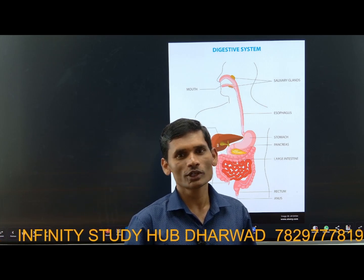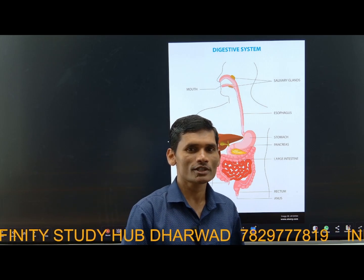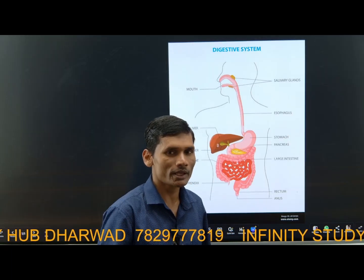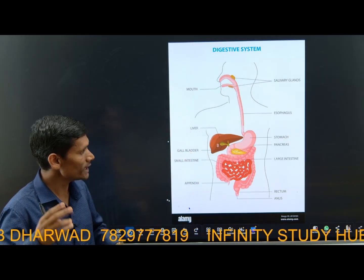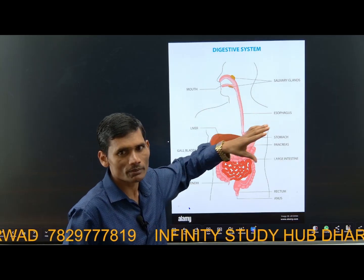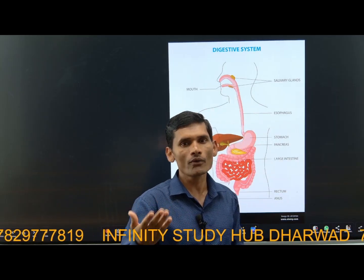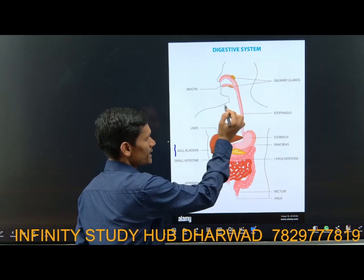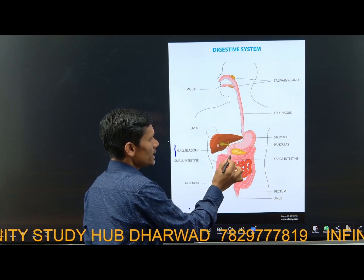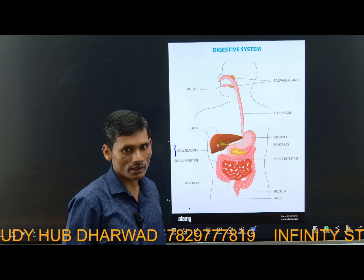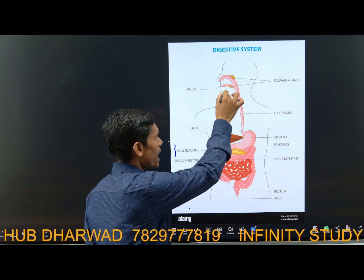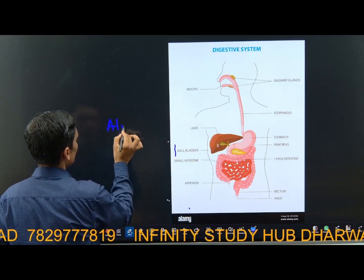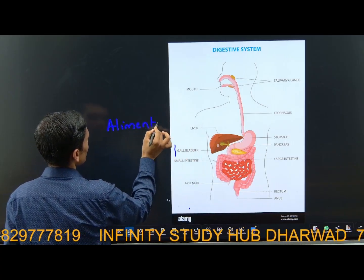Hello dear students. In today's class we are going to learn the human digestive system. In order to understand in depth, we are going through a process method — a very easy shortcut method. We start with the human digestive system, meaning how we are defining it: buccal cavity, esophagus, stomach, small intestine, large intestine, rectum, anus. All these parts together are called the alimentary canal.